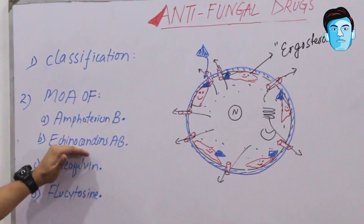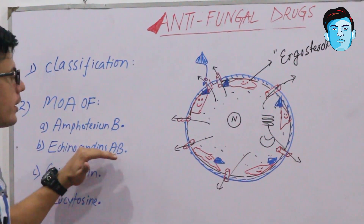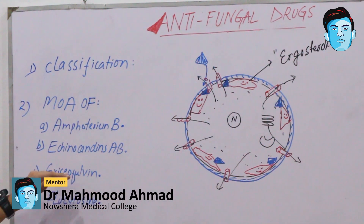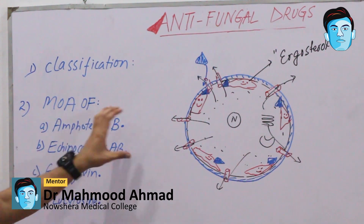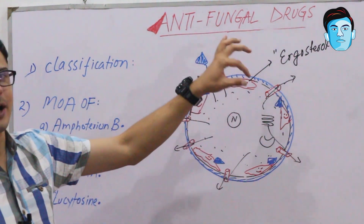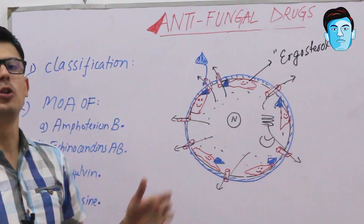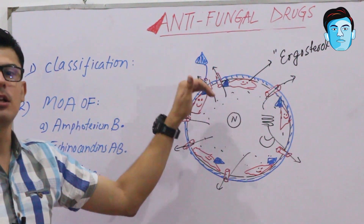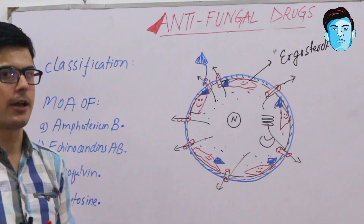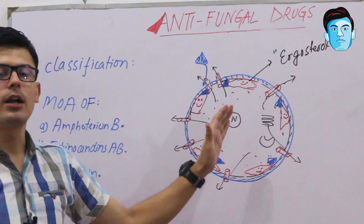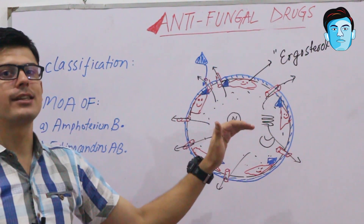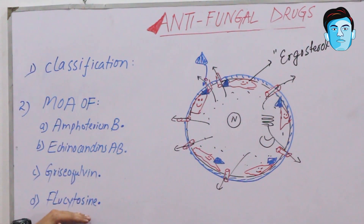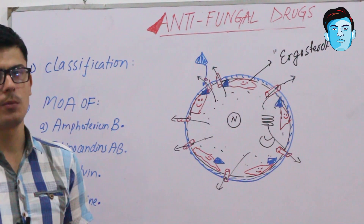Echinocandin antibiotics decrease cell wall synthesis. Griseofulvin acts on the fungal nucleus and decreases the mitosis rate — it does not kill the fungal cell directly but decreases its growth rate, leading to fungistatic action. Flucytosine decreases ribosome synthesis.